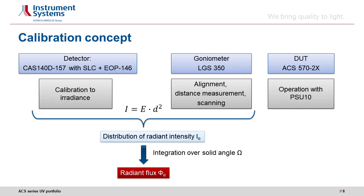The newly developed calibration concept for radiant flux is as follows. A stray light corrected wide range spectroradiometer, CAS 140D, was used as a detector. Stray light correction is particularly important because there is a strong increase in the stray light proportion, particularly in the UV range. An LGS 350 was used as a goniometer and ACS 570 as a DUT, operated with a PSU tank as a control unit. This system setup was traceably calibrated to the irradiance. The irradiance was measured for each solid angle omega and radiant intensity determined by multiplying the square of the distance. The radiant flux phi can be determined numerically by integration of the distribution of radiant intensity over the entire space.